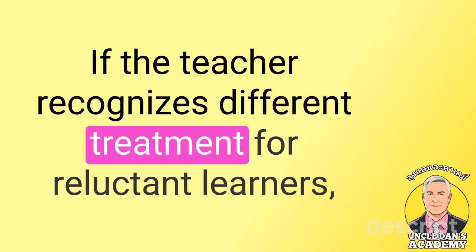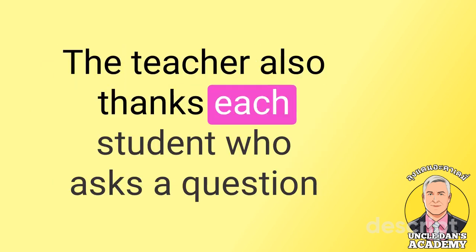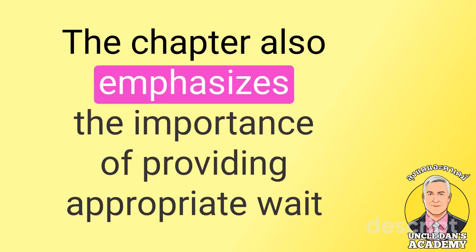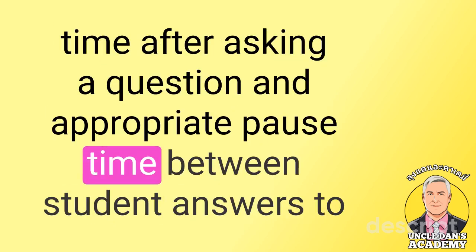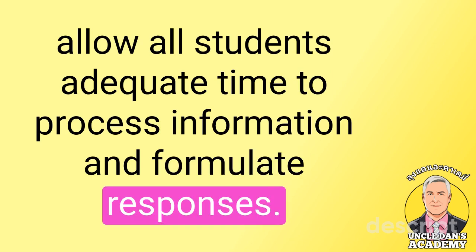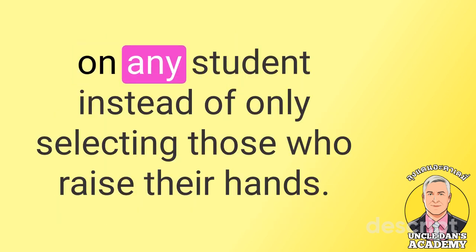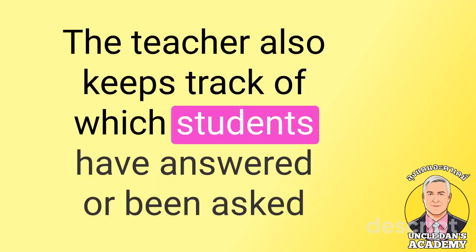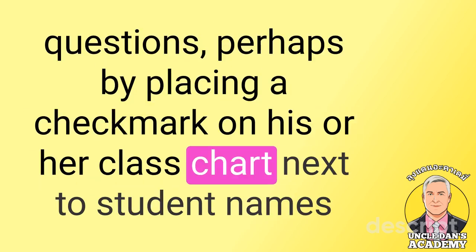If the teacher recognizes different treatment for reluctant learners, the teacher makes comments to those who offer them. The teacher also thanks each student who asks a question or provides an answer, even if the answer is incorrect. The chapter also emphasizes the importance of providing appropriate wait time after asking a question and appropriate pause time between student answers to allow all students adequate time to process information and formulate responses. The teacher ensures that all students have equal opportunities to respond by calling on any student instead of only selecting those who raise their hands, and keeps track of which students have answered or been asked questions, perhaps by placing a checkmark on the class chart next to student names.